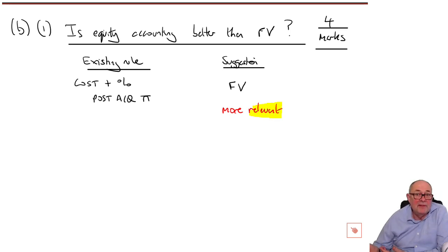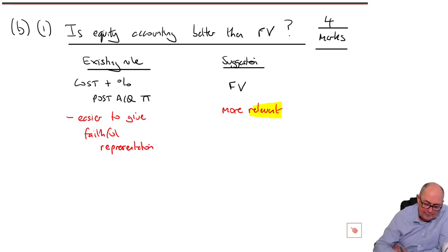We know at the moment that when you have an associate, the existing rule is cost plus share of post-acquisition profits. The suggestion, we're now being asked to discuss a so-called current issue for four marks. And like all current issues, four marks is plenty. You can say, well, I can demonstrate I understand the issue, would be to use fair value. You're back to the old chestnuts about those characteristics of financial information. Because fair value might be more relevant. And you could explain relevance a little bit.